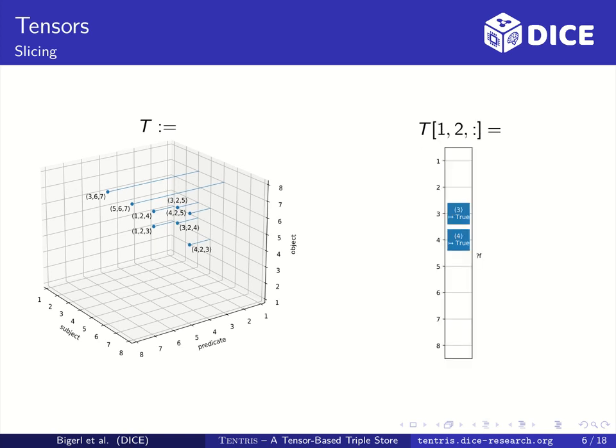The slice key can be any combination of key parts and unbound positions. Here for example the first two positions are set to 1 and 2 resulting in an order 1 tensor or vector. It contains those entries of T for which the first key parts are 1, 2.